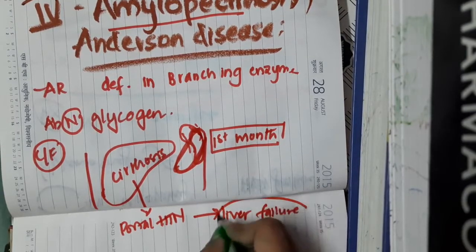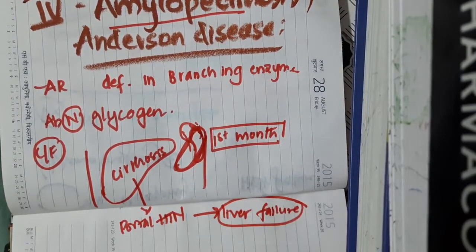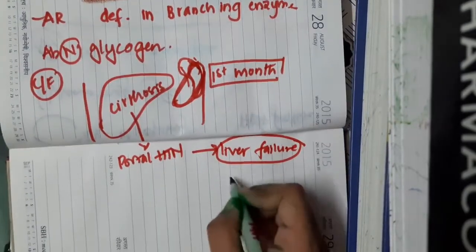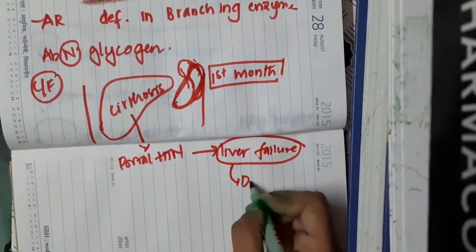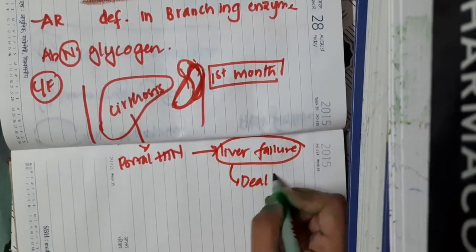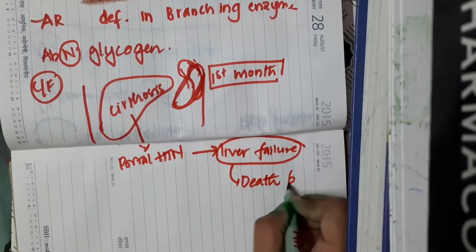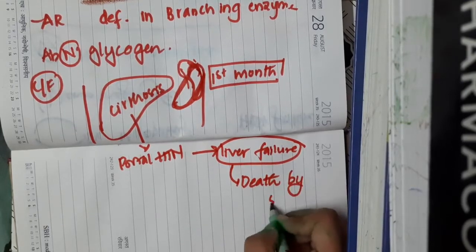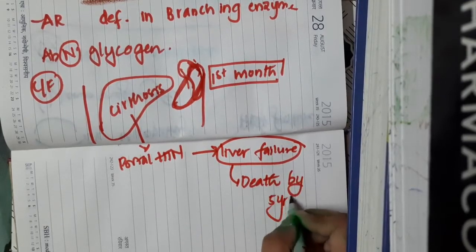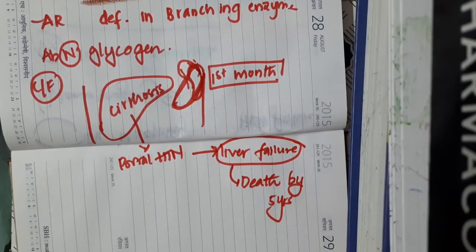Portal hypertension can finally cause liver failure, which is the most common cause of death in patients with Anderson disease, especially by 5 years of age.